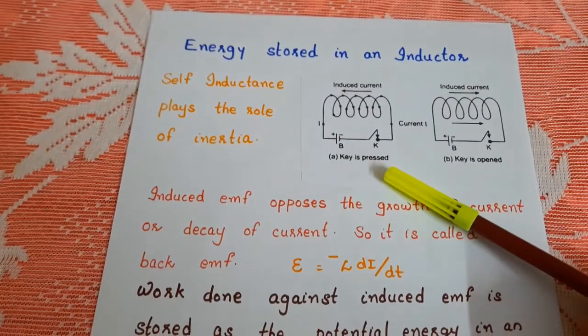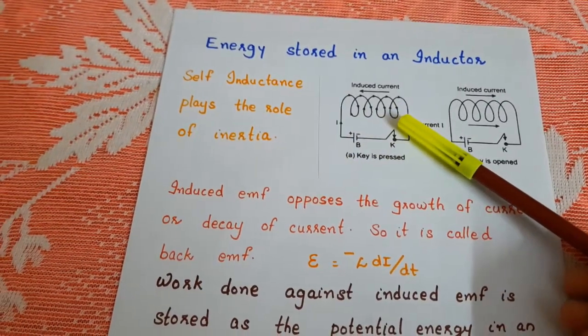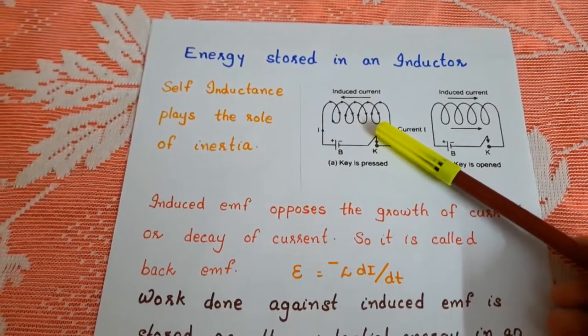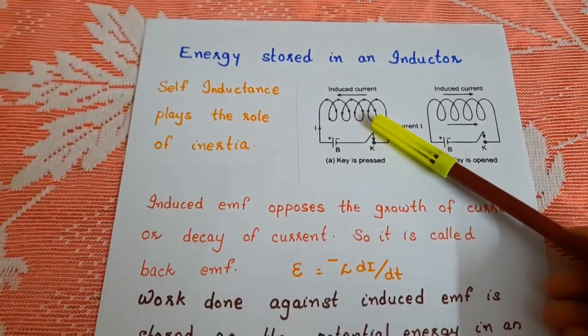When the key is pressed, current flows through the coil. As the current through the coil increases, magnetic flux linked with the coil increases.